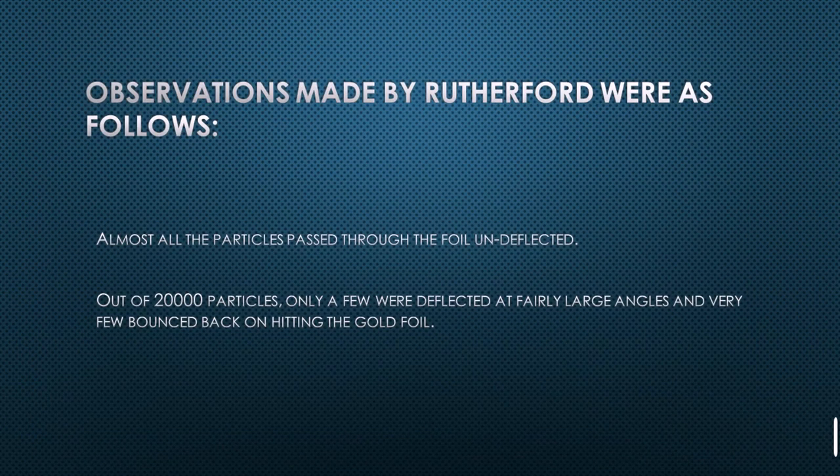Rutherford made several assumptions and observations while performing his experiment. He said that almost all particles passed through the gold foil undeflected. This was proof that most of the atom is empty space. Out of 20,000 particles, only a few were deflected at large angles and few were deflected at low angles.